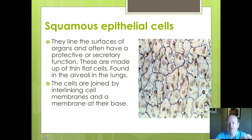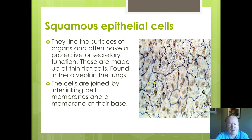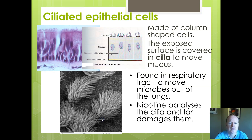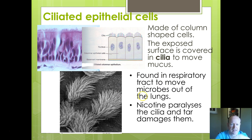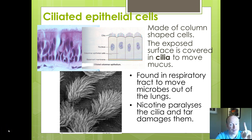Squamous epithelia are flat, thin cells — sometimes described as pavement epithelia because of their classic crazy-paving shape. The alveoli are lined with squamous epithelia. They are joined by their cell membranes with an underlying basal membrane. Ciliated epithelia are similar — one layer of epithelial cells — but they have hair-like cilia which waft backwards and forwards and move substances around. They're classically found in the lungs, but also in the fallopian tubes to waft the egg along.